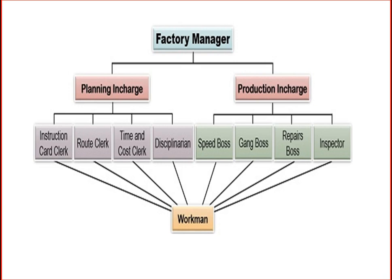Under the planning in-charge, there are 4 supervisors: instruction card clerk, route clerk, time and cost clerk, and disciplinarian clerk. Under the production in-charge, there are also 4 supervisors: gang boss, repair boss, inspector, and speed boss.